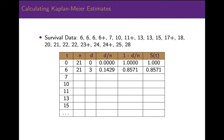At time T equals 6 years, all 21 people enrolled were still alive a millisecond before 6 years, and then 3 people died. Therefore, the number at risk is 21, the number of deaths is 3, the risk of death is 3 divided by 21 which equals 0.1429, the risk of not dying is 1 minus 0.1429 which equals 0.8571, and the cumulative risk of surviving is 1 times 0.8571, which is 0.8571, or about 86%.